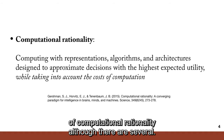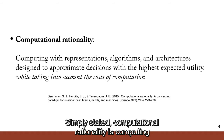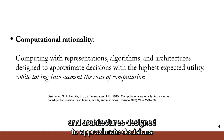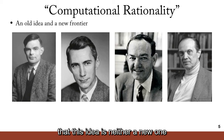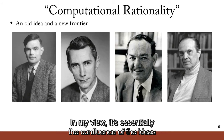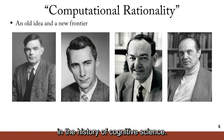Computational rationality is computing with representations, algorithms, and architectures designed to approximate decisions with highest expected utility while taking into account the costs of computation. This idea is neither a new one nor the work of any one individual. In my view, it's essentially the confluence of the ideas of four of the most influential people in the history of cognitive science. See if you can name each of these people.